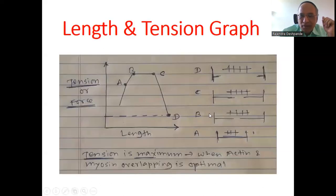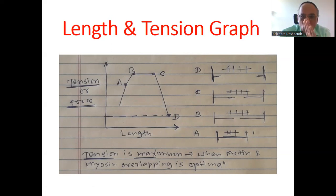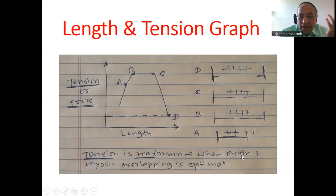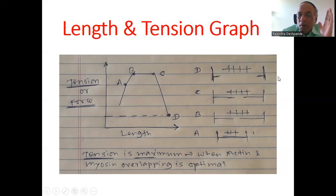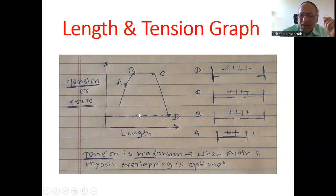Let me show you the graph. The y-axis represents tension or force, and the x-axis represents length. Tension is maximum at the B and C values on the graph. When actin and myosin overlapping is optimal — this is the myosin filament, this is the actin filament — when overlapping is maximum, that particular tension will be highest. If the Z lines are too far apart, overlapping is not maximum and tension will be less. At point D, the resting condition shows no tension because actin and myosin are too far apart.